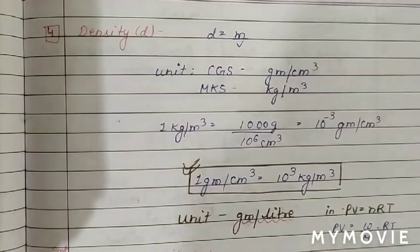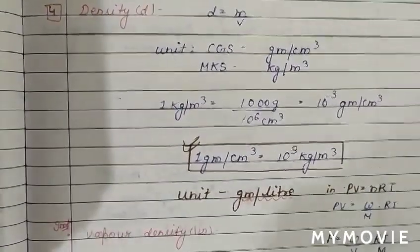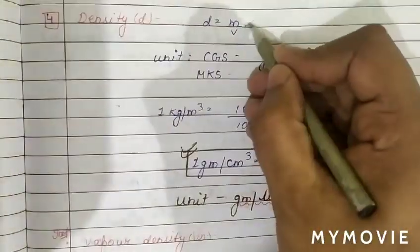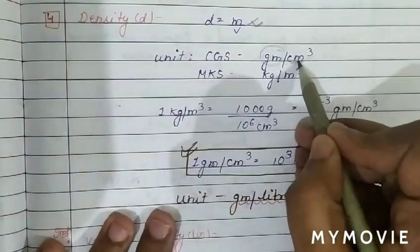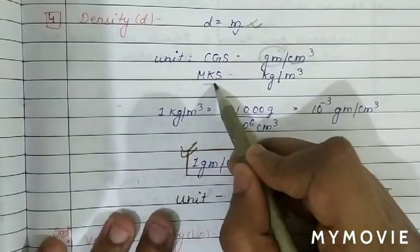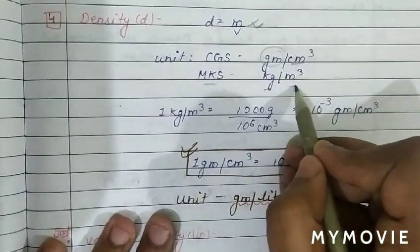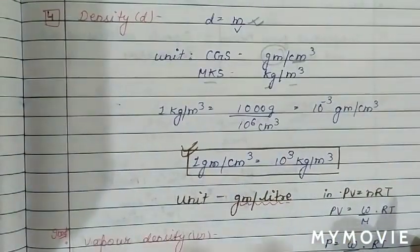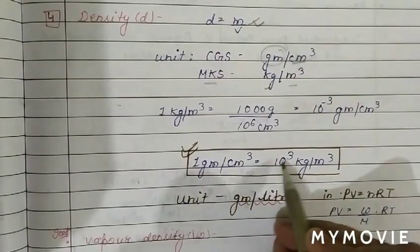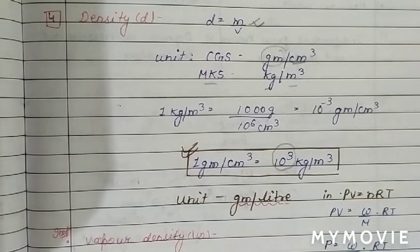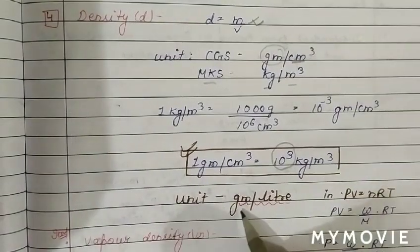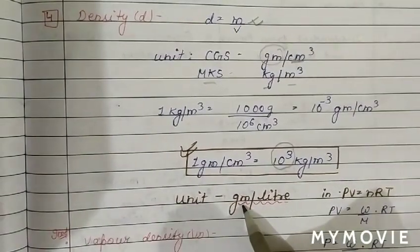The next measurable property is density, which is mass divided by volume. In CGS units it is g/cm³, and in MKS units it is kg/m³. The relation between them is 1 g/cm³ = 10³ kg/m³. We may also use density in g/L.